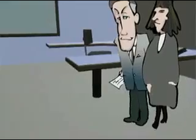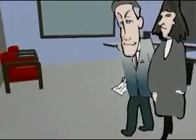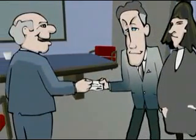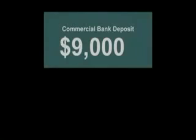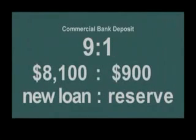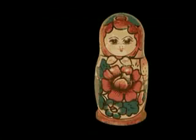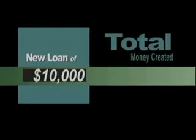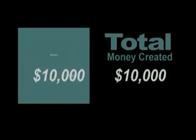Step 3: If that $9,000 is then deposited by a third party at the same bank that created it, or at a different one, it becomes the legal basis for a third issue of bank credit, this time for the amount of $8,100. Like one of those Russian dolls where each layer contains a slightly smaller doll inside, each new deposit contains the potential for a slightly smaller loan in an infinitely decreasing series.